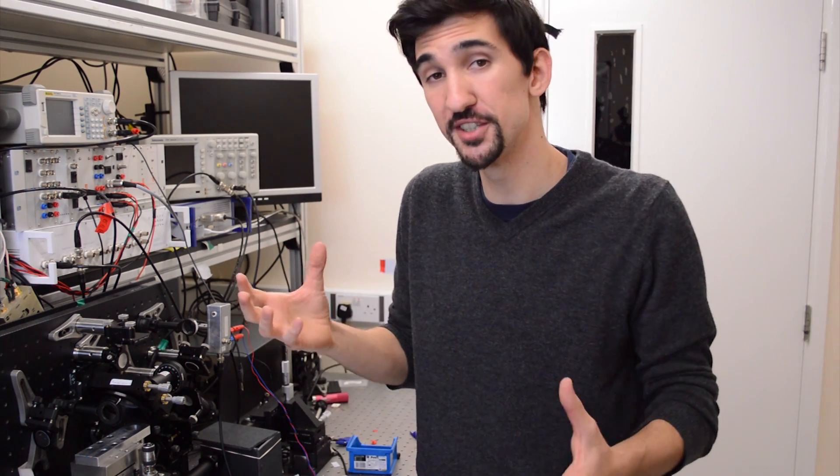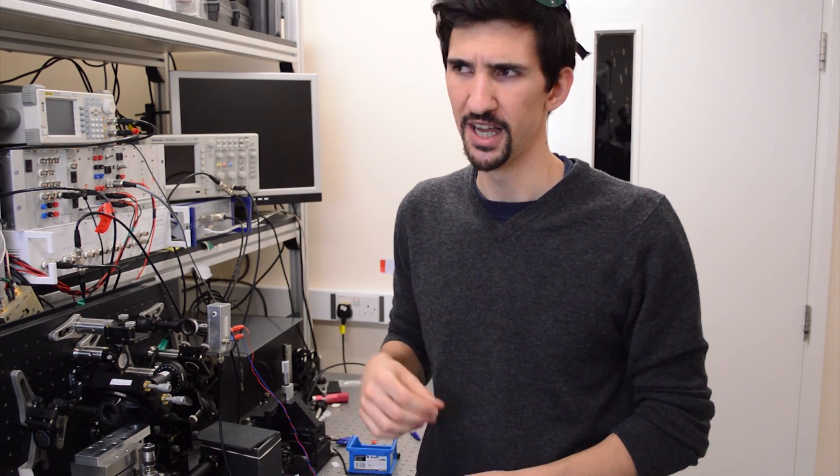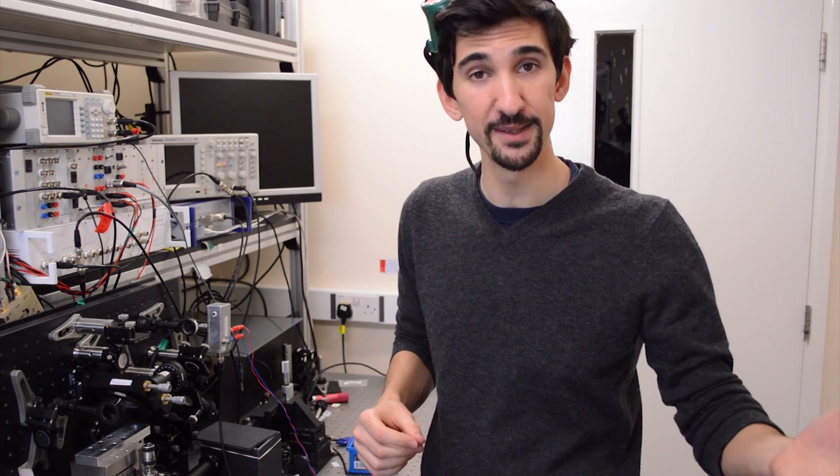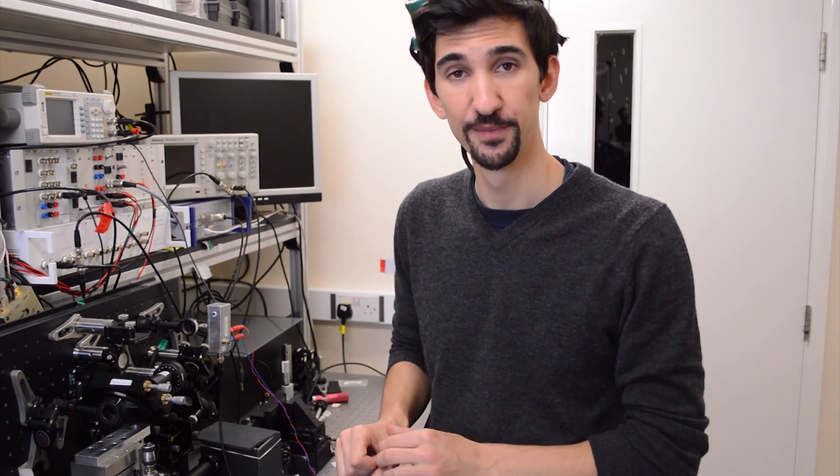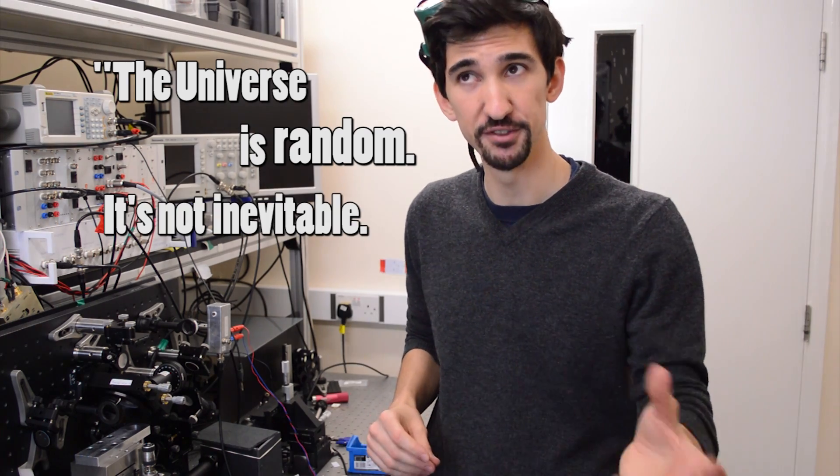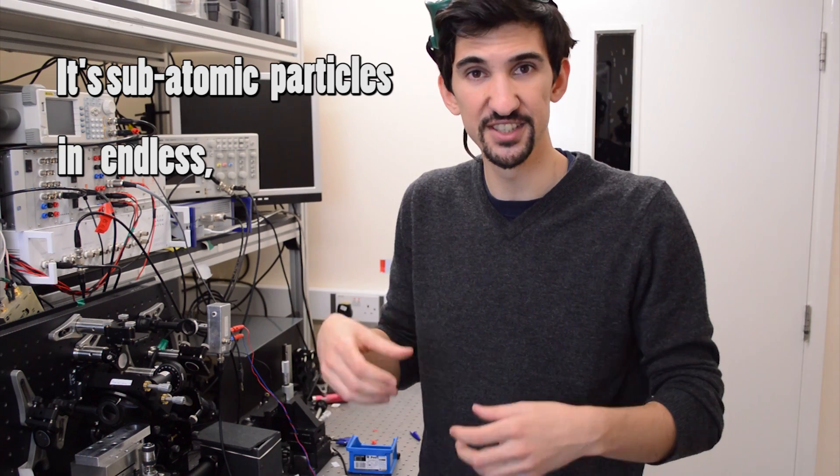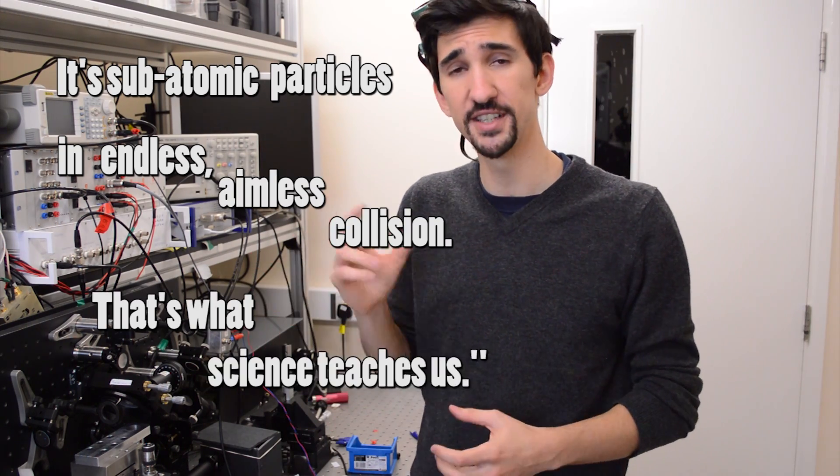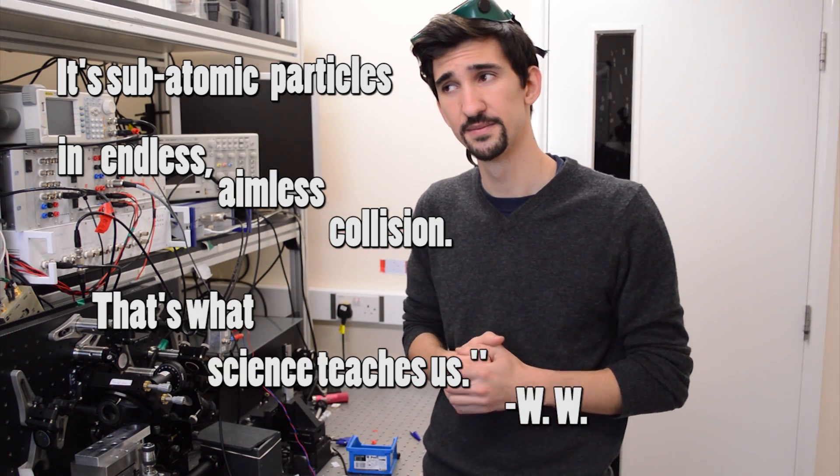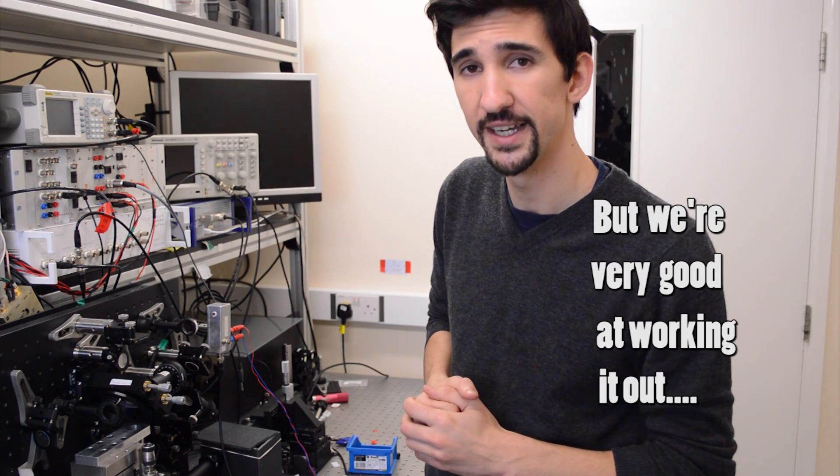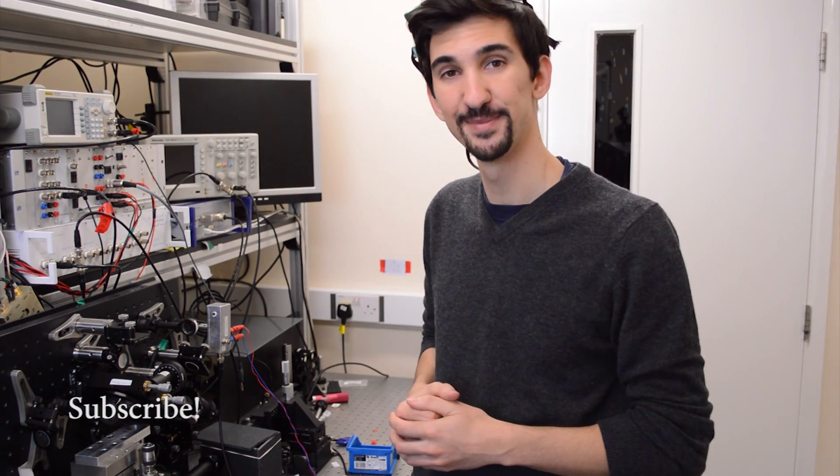I hope I have made you a little bit more certain about the uncertainty principle. And so I leave you with a quote from the man himself, Heisenberg. The universe is random. It's not inevitable. It's simple chaos. It's subatomic particles in endless, aimless collision. That's what science teaches us. We're very good at working it out. I'll see you next time. Bye.